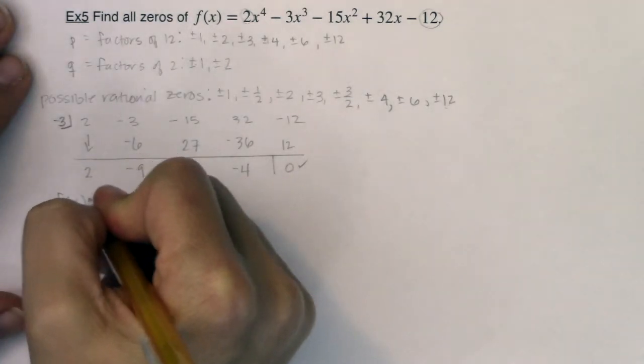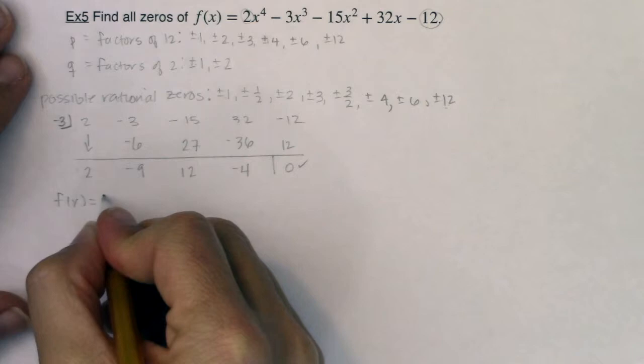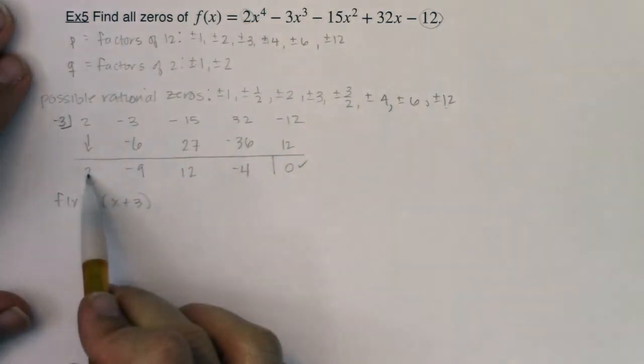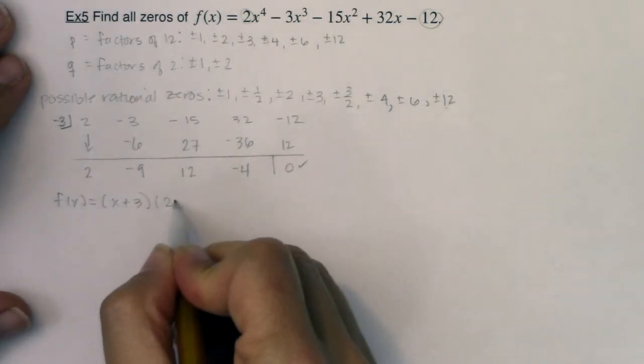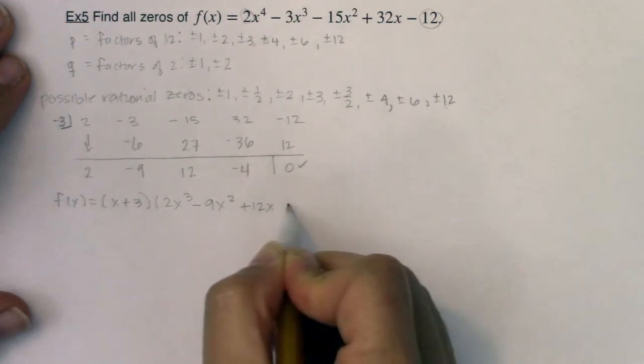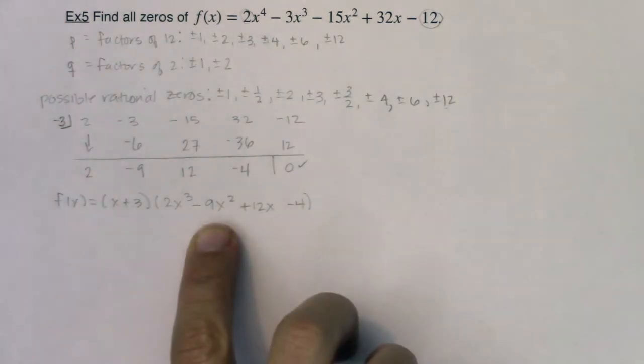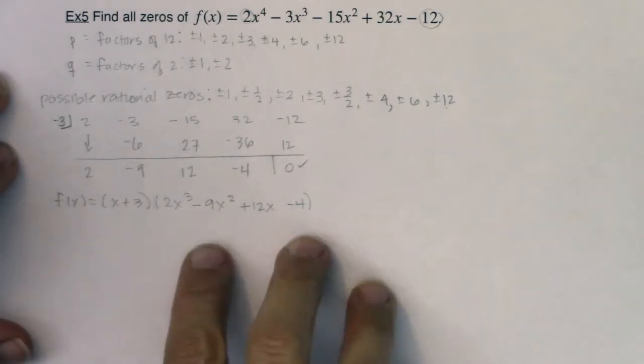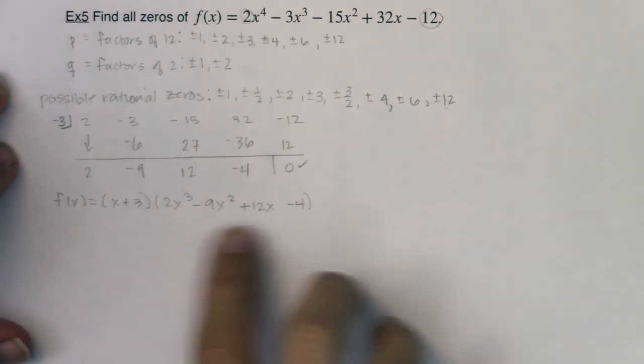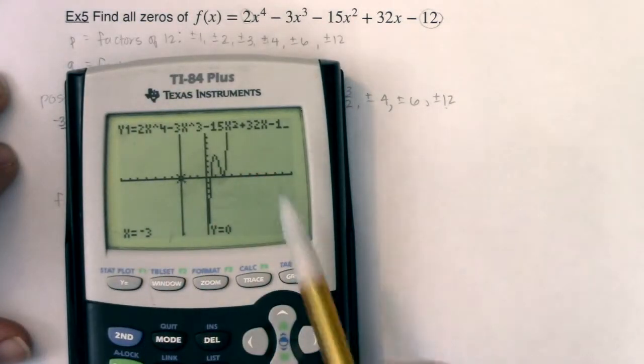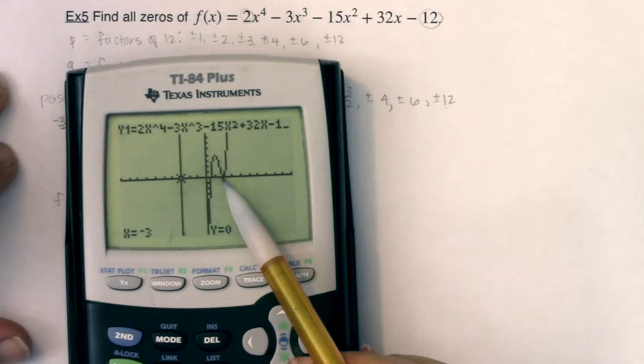So at this point I know f of x. If negative 3 is a zero, x plus 3 is a factor. I started with a quartic, I should be down one degree, so I have 2x cubed minus 9x squared plus 12x minus 4. I'm not quite done because this isn't a quadratic. Once it's down to a quadratic, all I'll have to do is either factor or complete a square quadratic formula, but I'm not there yet. This is a cubic. So let me go to my function, my graph again, and I think there's a zero here at 2.